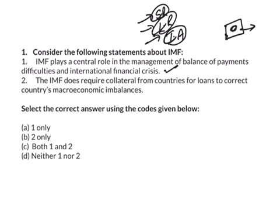The other one is technical assistance role. Under this role, the IMF will provide technical assistance and training to the member countries in the areas of expertise, which can be called as capacity building. So yes, it plays a central role in the management of balance of payments difficulties and international financial crisis. This statement is correct because it plays a role of lending role.